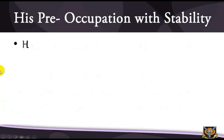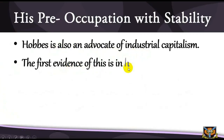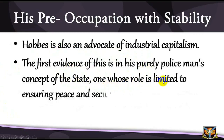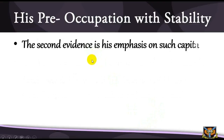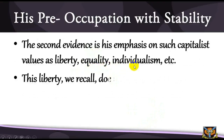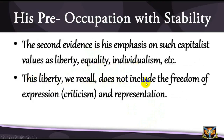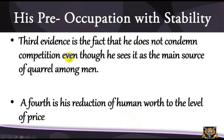Hobbes is also an advocate of industrial capitalism. The first evidence of this is in his purely policeman's concept of the state — one whose role is limited to ensuring peace and security of life and property. The idea of limited government is typical of the liberal state. Secondly, evidence is found in its emphasis on such capitalist values as liberty, equality, individualism, etc. This liberty, we recall, does not include freedom of expression, criticism and representation — it is limited to only what the sovereign has permitted, such as the liberty to buy and sell and to enter into contractual obligations with others. Thirdly, evidence is the fact that he does not condemn competition, even though he sees it as the main source of quarrel among men. And lastly, his reduction of human worth to the level of price.